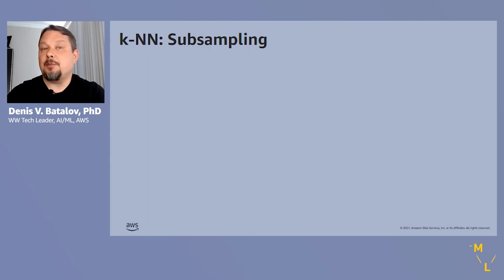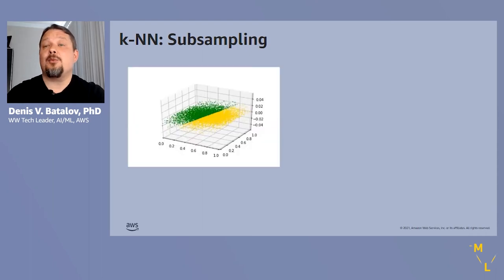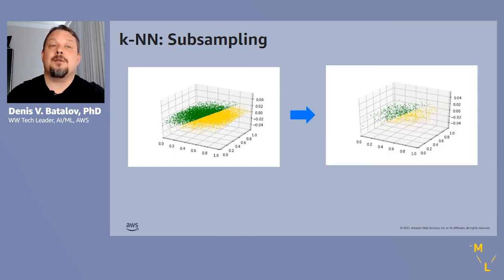Subsampling is a very simple yet often very effective way of reducing the inference cost. Just as in other learning settings, we might have more data points than we actually need. For example, we might have an available dataset of, say, 10 million data points, but we could do a good enough job with just 100,000 points. The relevant hyperparameter to use in SageMaker is called sample size. The specified number of samples will be drawn at random from the original dataset, and only these will be used to pick nearest neighbors.